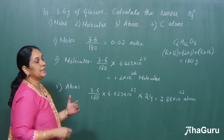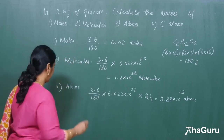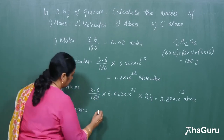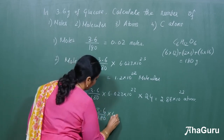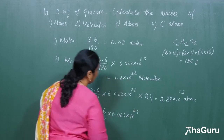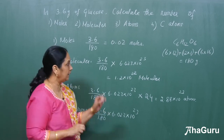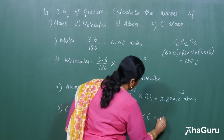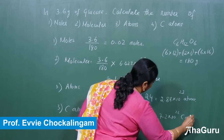Next, we calculate the number of carbon atoms. The first two steps are the same: 3.6 divided by 180 multiplied by 6.023 × 10²³. Since there are 6 carbon atoms in glucose, we multiply by 6. This gives 7.2 × 10²² carbon atoms.